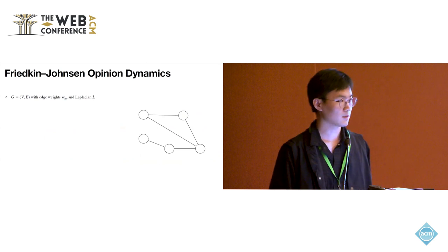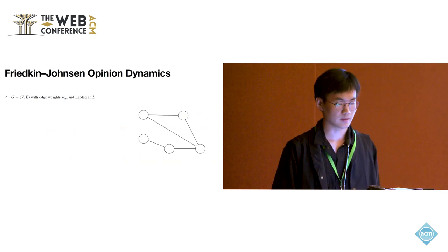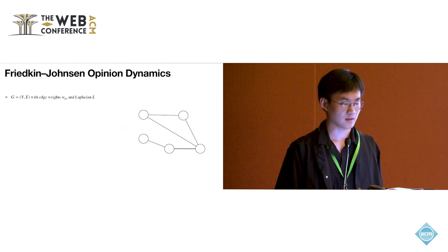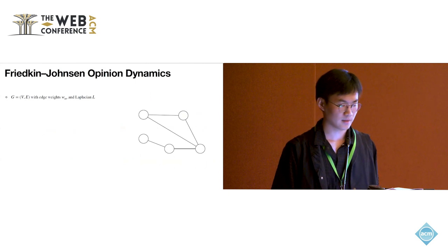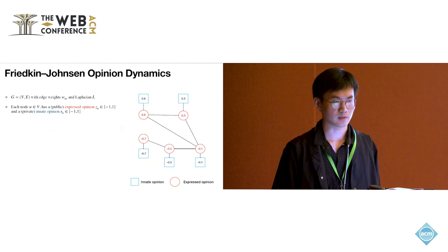As a starting point, we think about the opinion dynamics models, which is Friedkin-Johnsen opinion dynamics formulation models. We consider a graph G equals V,E with weights and a Laplacian L. Each node u has an expressed opinion zu in minus one to one and also a private innate opinion su also in minus one to one.